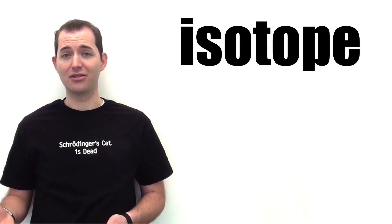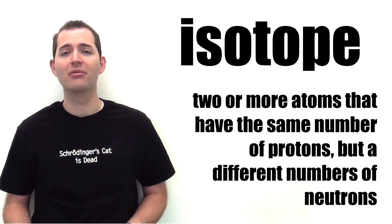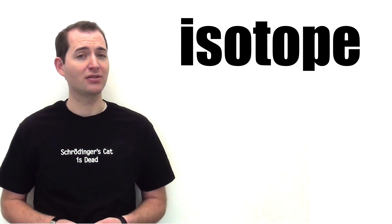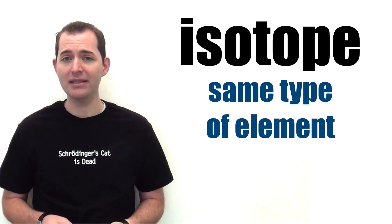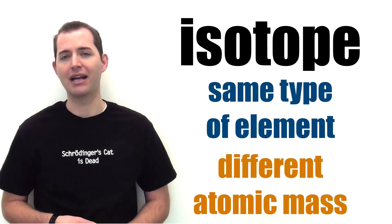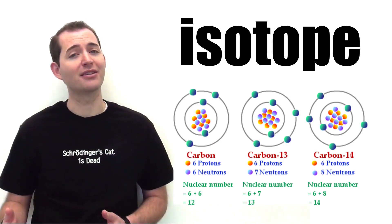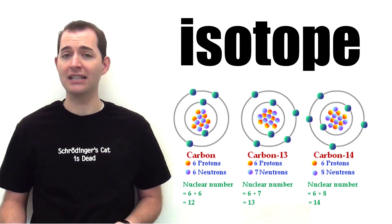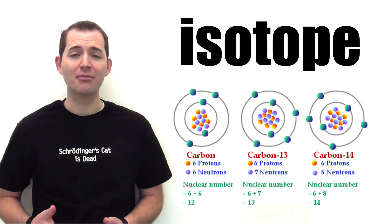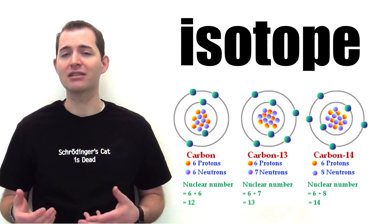Our next word is isotope. An isotope is two or more atoms that have the same number of protons but a different number of neutrons. Because they have the same number of protons, they are the same type of element, but because of the different number of neutrons, they have a different atomic mass. For example, we might have carbon-12, carbon-13, and carbon-14. Each of these isotopes of carbon has the same number of protons, which is 6, but a different number of neutrons, which is 6, 7, and 8 respectively.